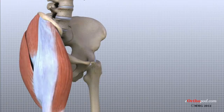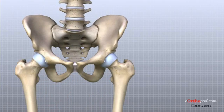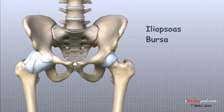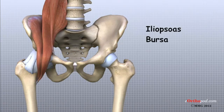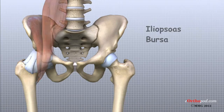Another bursa sits between the iliopsoas muscle and the hip joint where the iliopsoas tendon passes in front of the hip joint. When this bursa becomes inflamed, the condition is called iliopsoas bursitis.